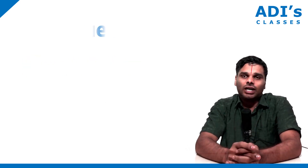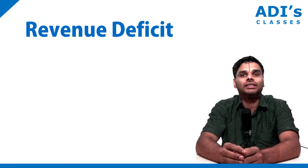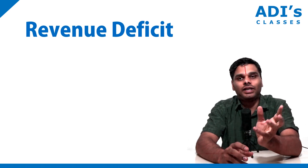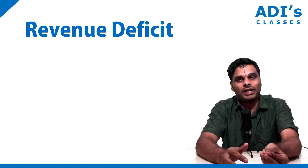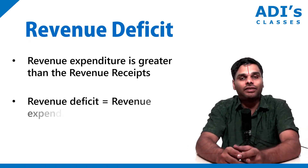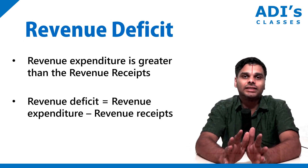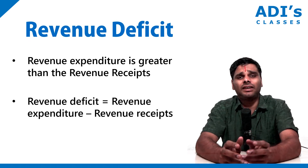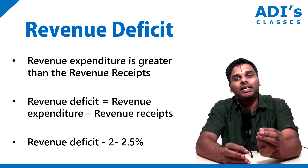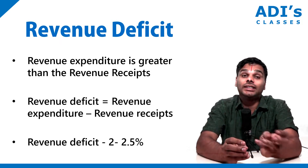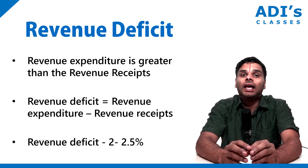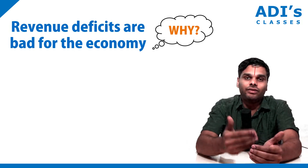The next term is revenue deficit. Revenue deficit is the difference between revenue expenditure and revenue receipts, where revenue expenditure is greater than revenue receipts. So, revenue deficit equals revenue expenditure minus revenue receipts. The revenue deficit in India has generally been around 2 to 2.5%. Revenue deficits are not desired — what you want is a capital deficit. Revenue deficits are bad for the economy.